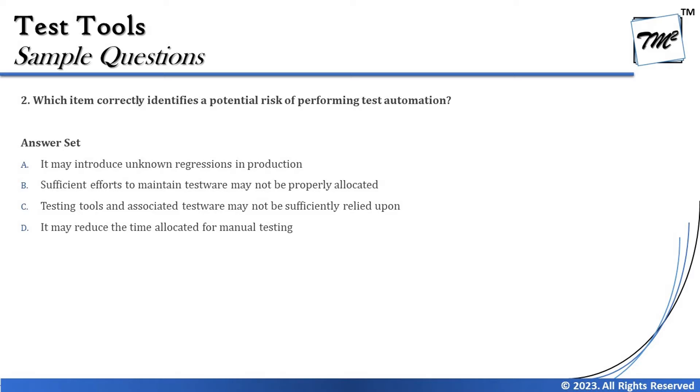Indirectly, they're asking which option is a risk of using test automation tools in the organization. All we have to do is recall the benefits and risks, then evaluate the options carefully, as the wording may be twisted to confuse you. Option A says it may introduce unknown regression in production — unknown regression is not a risk related to a test tool; updates and upgrades are the triggers for regression in production, not test tools.